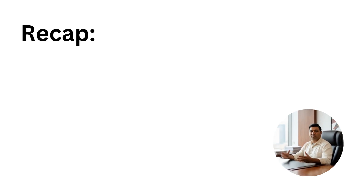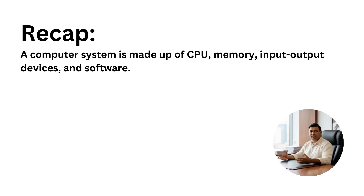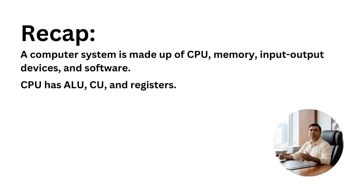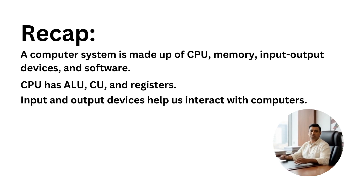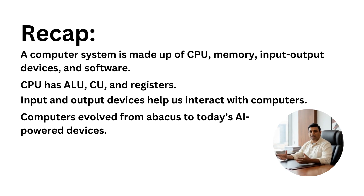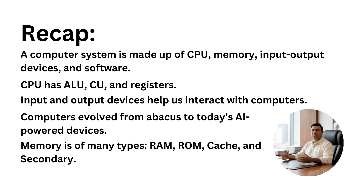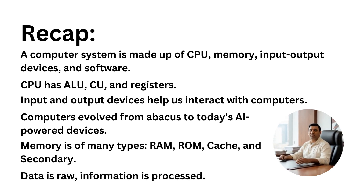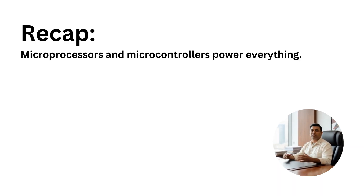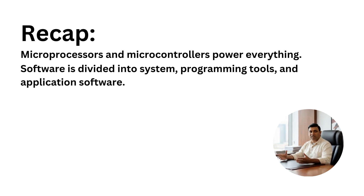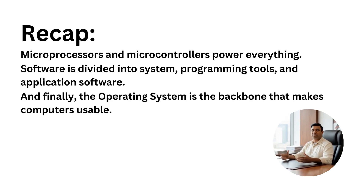So students, let's quickly recap what we learned today in Chapter 1. A computer system is made up of CPU, memory, input-output devices, and software. The CPU has ALU, CU, and registers. Input and output devices help us interact with computers. Computers evolved from the abacus to today's AI-powered devices. Memory types include RAM, ROM, cache, and secondary. Data is raw; information is processed. Microprocessors and microcontrollers power everything. Software is divided into system, programming tools, and application software. And finally, the operating system is the backbone that makes computers usable.